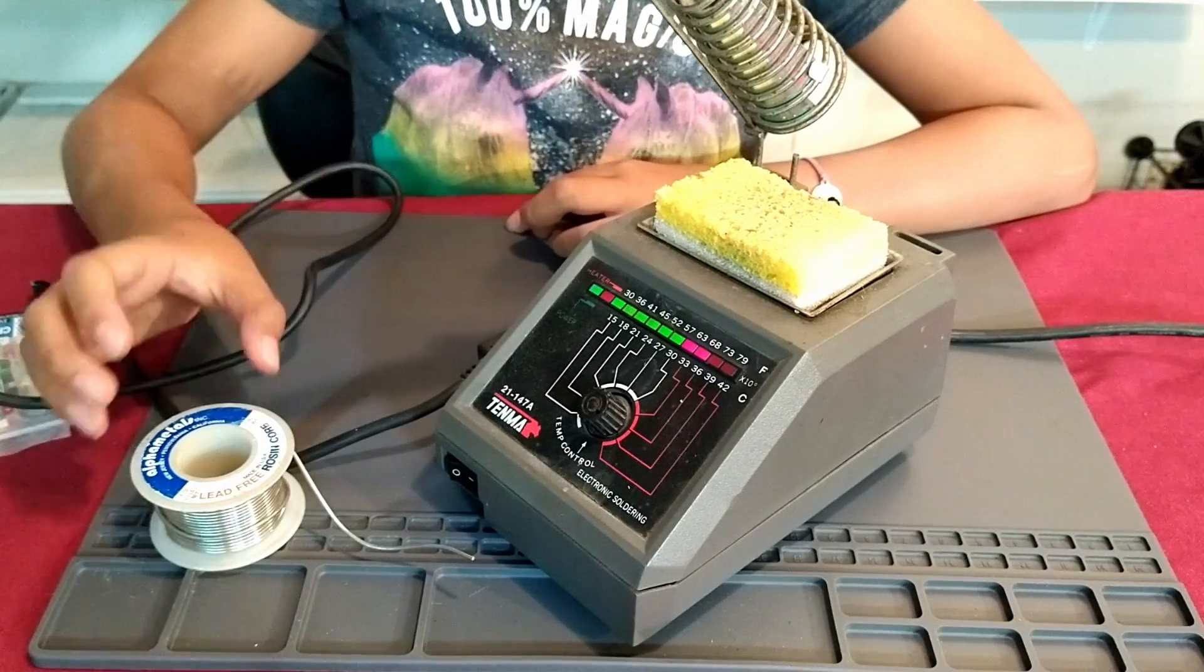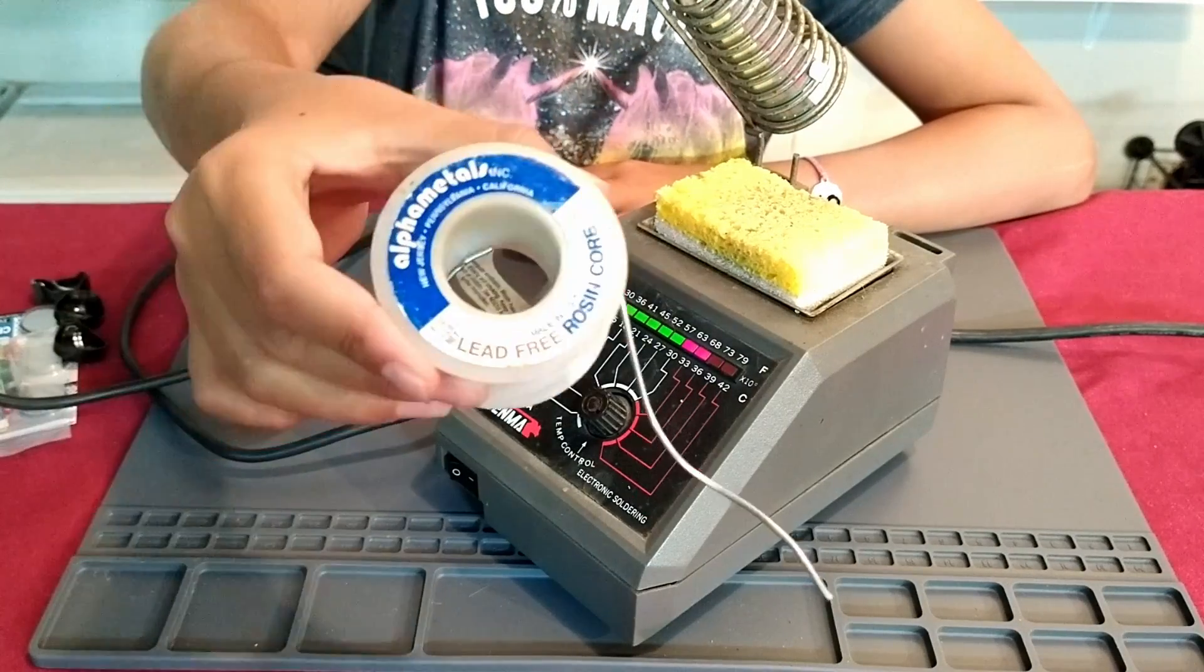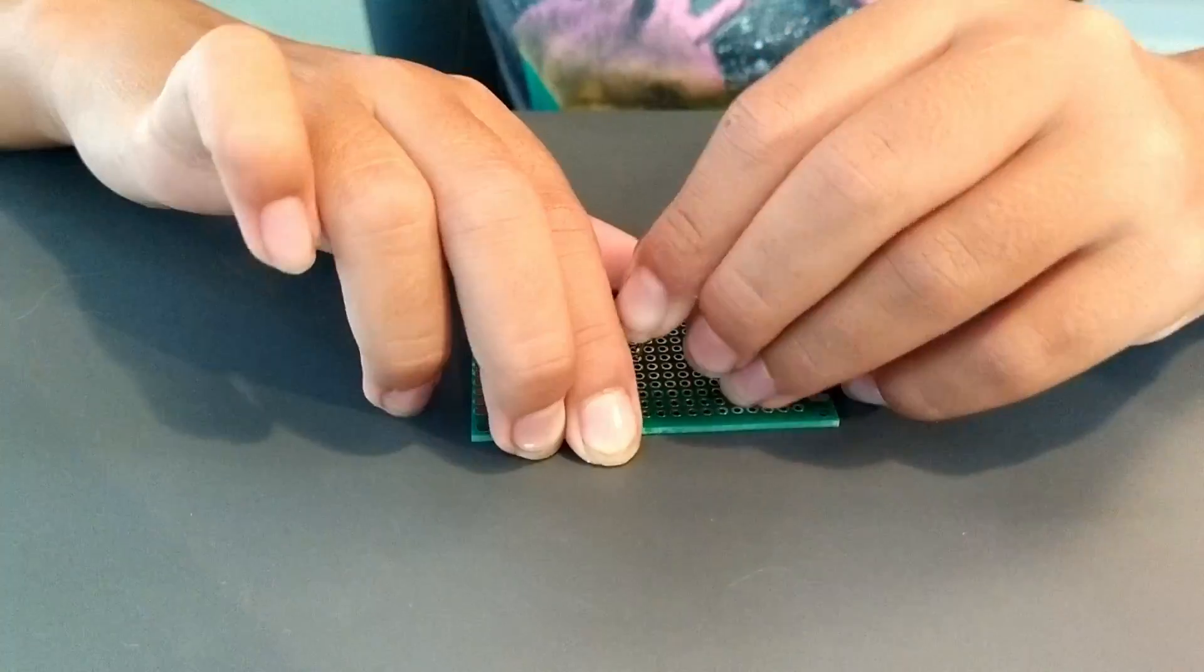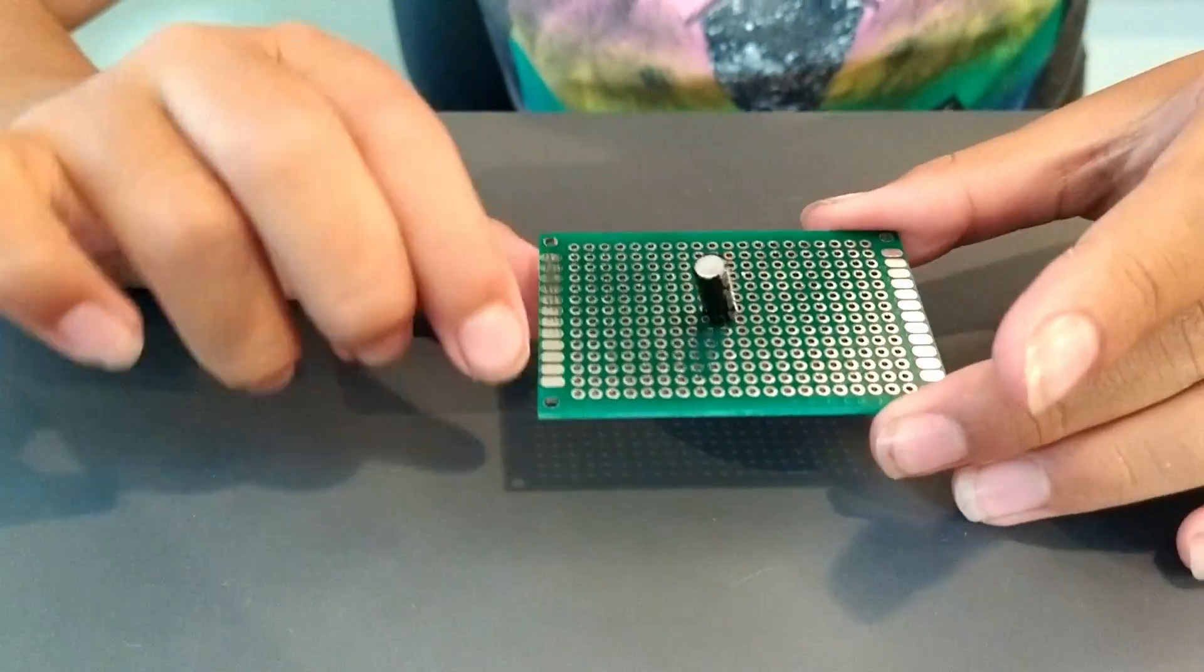We will be using 6040 rosin core solder. First start by inserting the part you want to solder into the correct holes in the circuit board.